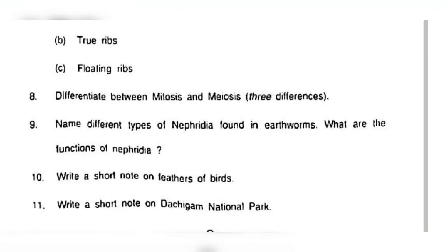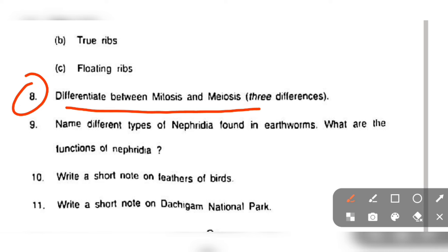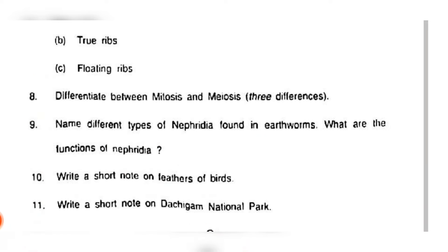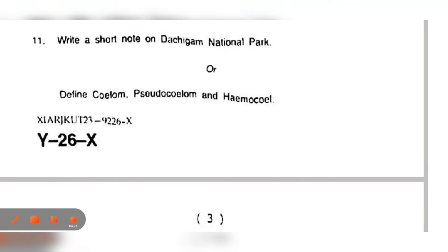Question number eight: differentiate between mitosis and meiosis, three differences. In cell cycle, name different types of nephridia found in earthworm. What are the functions of nephridia? We have the septal, integumentary, and pharyngeal nephridia in the excretory system. Question number ten: write a short note on the feathers of birds. Question number eleven: write a short note on national park. Then we have define coelom, pseudocoelom, and hemocoelom.